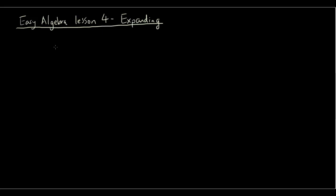Let's have a look at a normal expression that doesn't have any algebra: 5 times bracket 2 plus 3. If you remember from our first tutorial, whatever is inside brackets needs to be completed first. So 2 plus 3 is 5, therefore we have 5 times 5, which is 25.